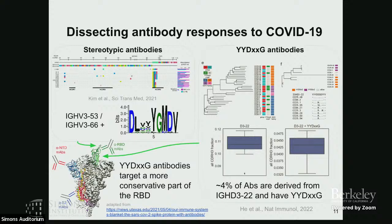Unfortunately, these stereotypic antibodies bind to the top part of the RBD that accumulates the most mutations, so when the virus mutated, these antibodies became largely useless. This is a very sad story because they represent the immunodominant part of the response — they develop in most people and are the most common antibodies. Our goal then is to study non-dominant responses and analyze how they can be useful against new versions of the virus.